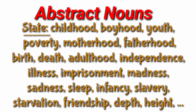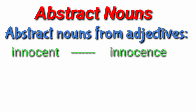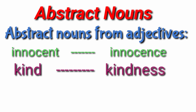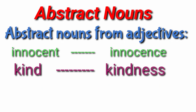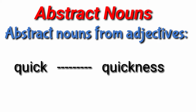Abstract nouns can be formed from adjectives, verbs and common nouns. Let us see examples of abstract nouns from adjectives. Innocent is an adjective and innocence is the abstract noun. Kind is an adjective and kindness is the abstract noun. Popular is an adjective and popularity is the abstract noun. Quick is an adjective and quickness is the abstract noun. In this way hundreds of nouns are made from adjectives.